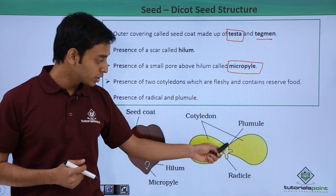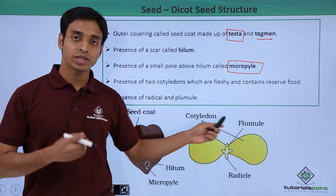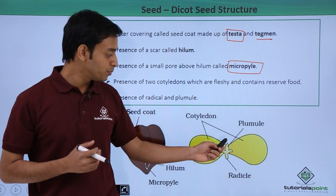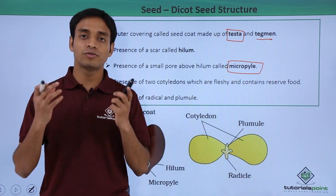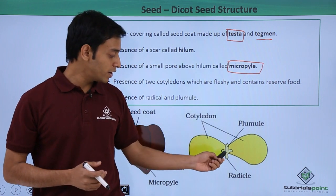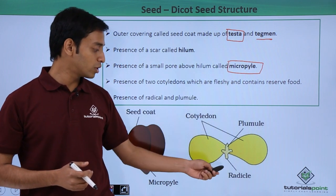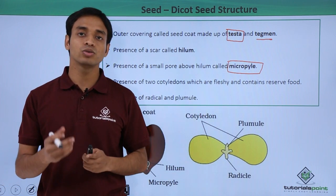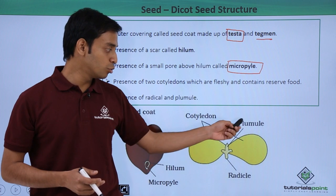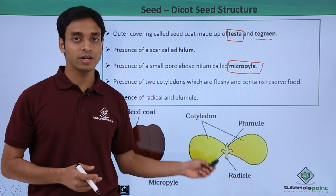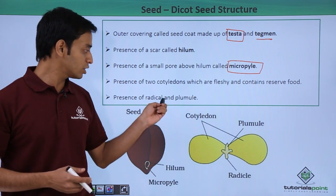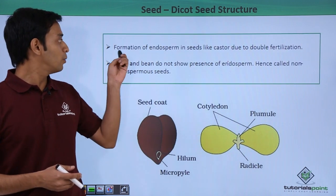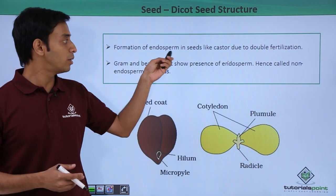The embryonal axis has two parts. The part known as the plumule later develops into the shoot — the stem which bears fruits, flowers, and leaves. The other part, known as the radicle, transforms into the roots. So the two parts of the embryonal axis are the plumule and the radicle.